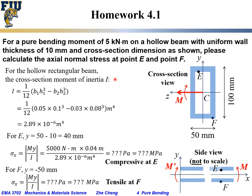For the hollow rectangular box beam, the cross-section moment of inertia learned in statics is: (1/12)(b1·h1³ − b2·h2³), where b1 and h1 are the outer dimensions, and b2 and h2 are the inner dimensions. Remember: b (the base) is parallel to the bending moment vector, and h is perpendicular to it.